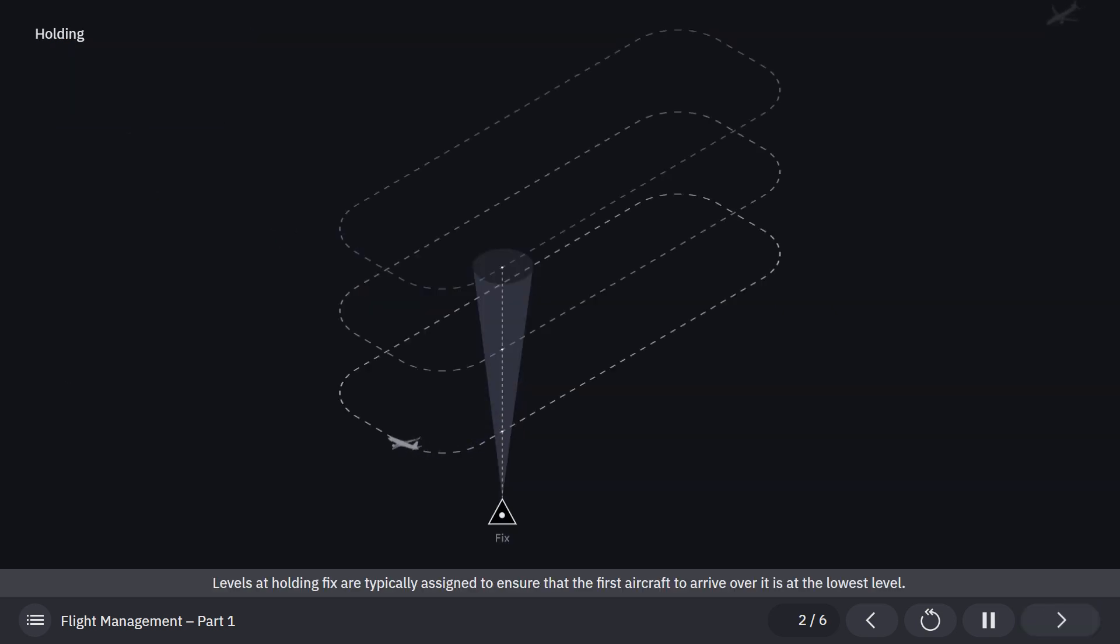Levels at holding fix are typically assigned to ensure that the first aircraft to arrive over it is at the lowest level. Successively, higher levels are then assigned to the following aircraft.